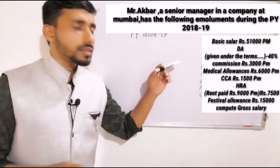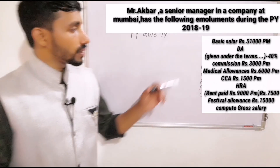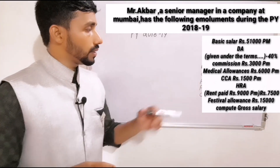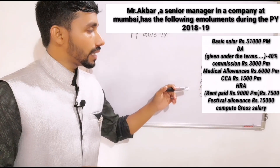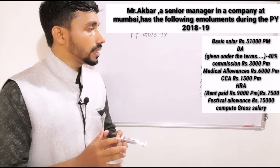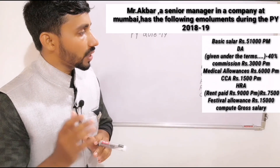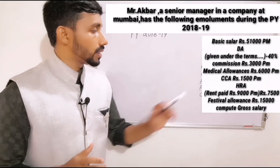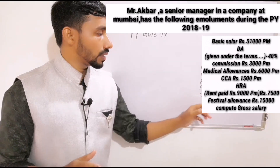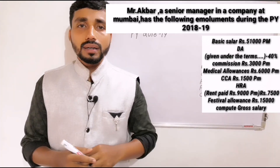Medical allowance: $6,000 per month. CCA: $1,500 per month. HRA: rent paid $9,000 per month. HRA received: $7,500 per month. Then festival allowance: $15,000. Compute gross salary.